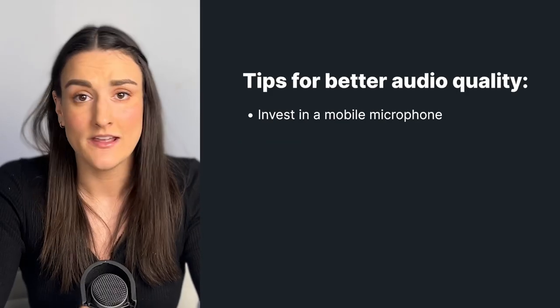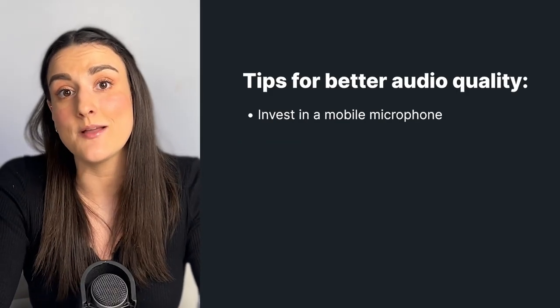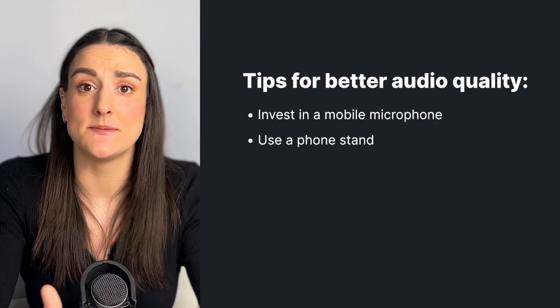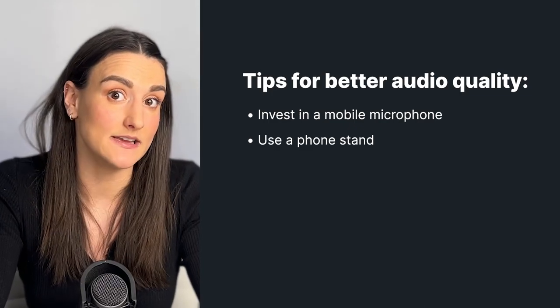Consider investing in a mobile mic for better audio quality. The one that we recommend is the Shure MV88. This will plug directly into your iPhone, or you can get the USB-C version for your Android. If you wanted something a little more budget-friendly or just wanted to test out the idea before investing, wired Apple headphones work well for first-time podcasters. You want to have a stand for your phone to make sure it stays in one place. If you're a hand talker, your phone will be moving away from your face and the audio won't be consistent.